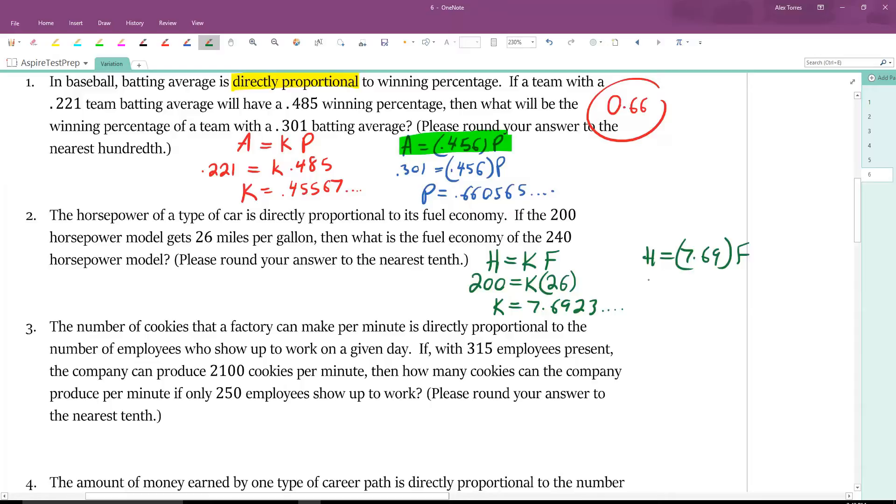What is the fuel economy of the 240 horsepower model? We can put 240 in for the horsepower. Now, to solve for F, we're dividing both sides by 7.69. 240 divided by, and once again, I'm not dividing by 7.69, I'm dividing by the actual number in the memory of my calculator, and the answer comes out to 31.2 without any extra decimals. Here we don't even need to round. The answer is 31.2.